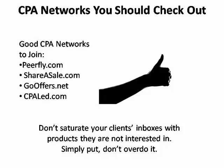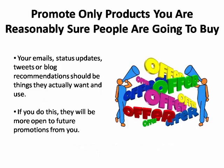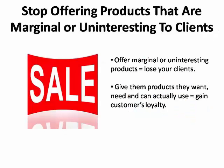If you have a hundred or more people on your list and you're sending them a product per day or a couple of products per week that they're not interested in, pretty soon they're going to stop opening your emails and you aren't going to be making a lot of sales. That's why you only want to promote products that you are reasonably sure people are going to buy. When people get emails, Facebook updates, tweets, or blog recommendations with things they actually want and can use, they'll be more open to future promotions from you, so you can keep selling and making money. Don't assault your prospective customers with products of marginal or no interest — hold onto your customers by only giving them things they want, need, and can really use.